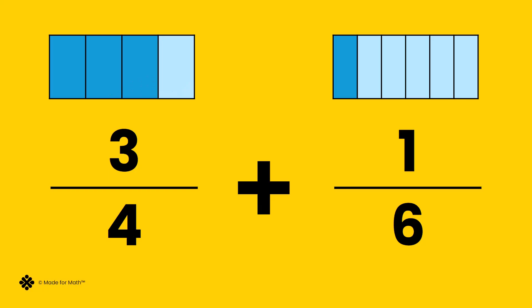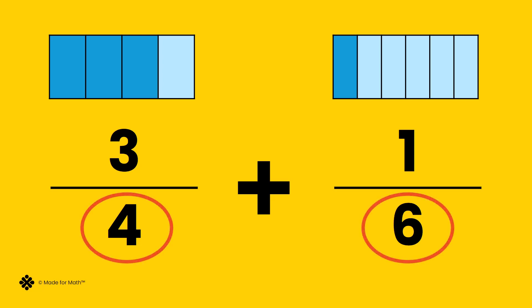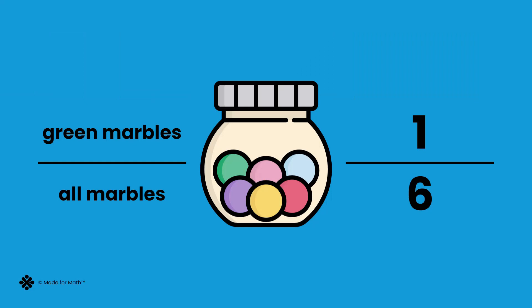These fractions have different denominators — they have different names. Can we combine them? Nope. We have to change the units of the fraction to be the same to make one complete whole. Denominators can refer to unit measures, like the complete quantity of marbles in this jar.